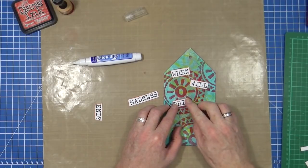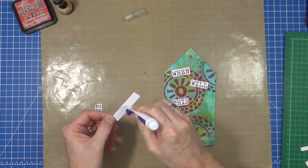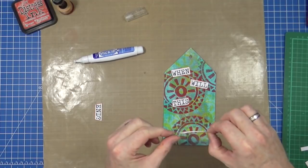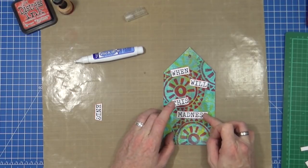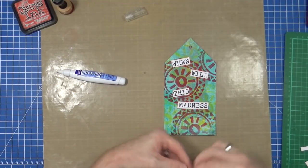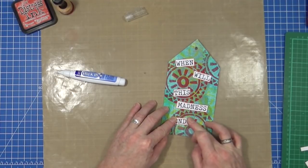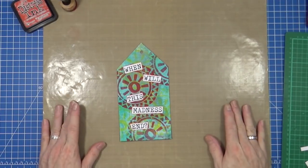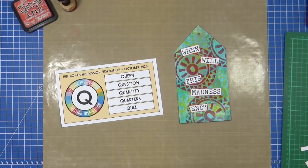Let's bring that down a little bit. And the last one. There we go. And I think that's me done. That's my mid-month mini mission inspiration for the month of October, using the keyword 'question: when will this madness end', which is a question we're all asking ourselves more than once, or more often, just recently.